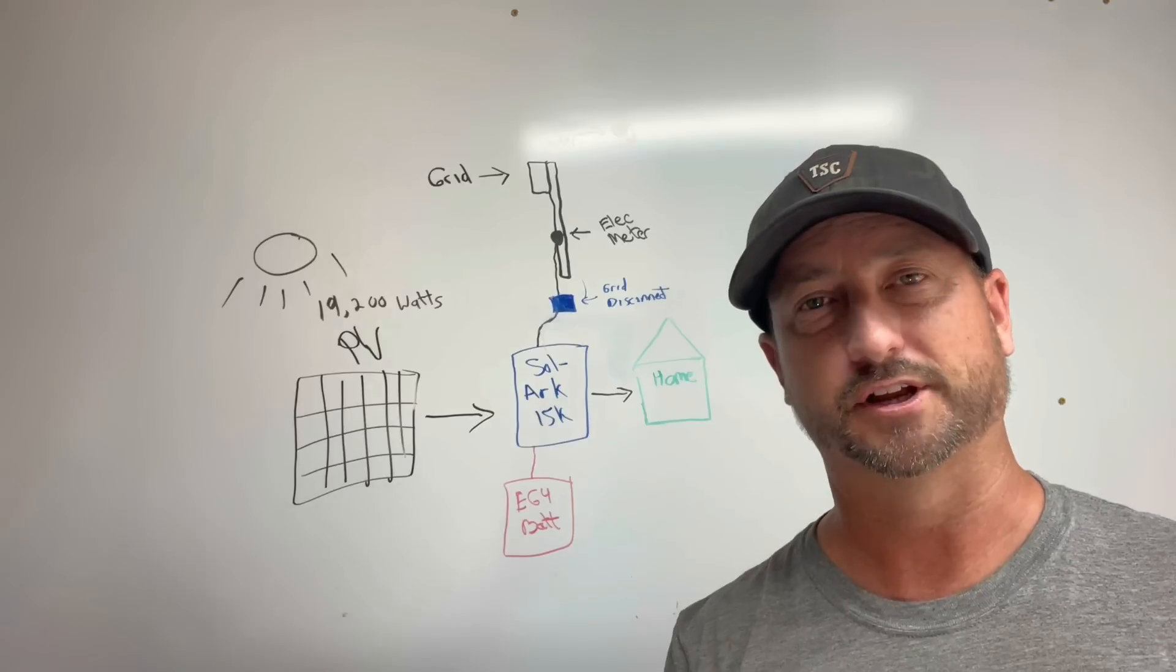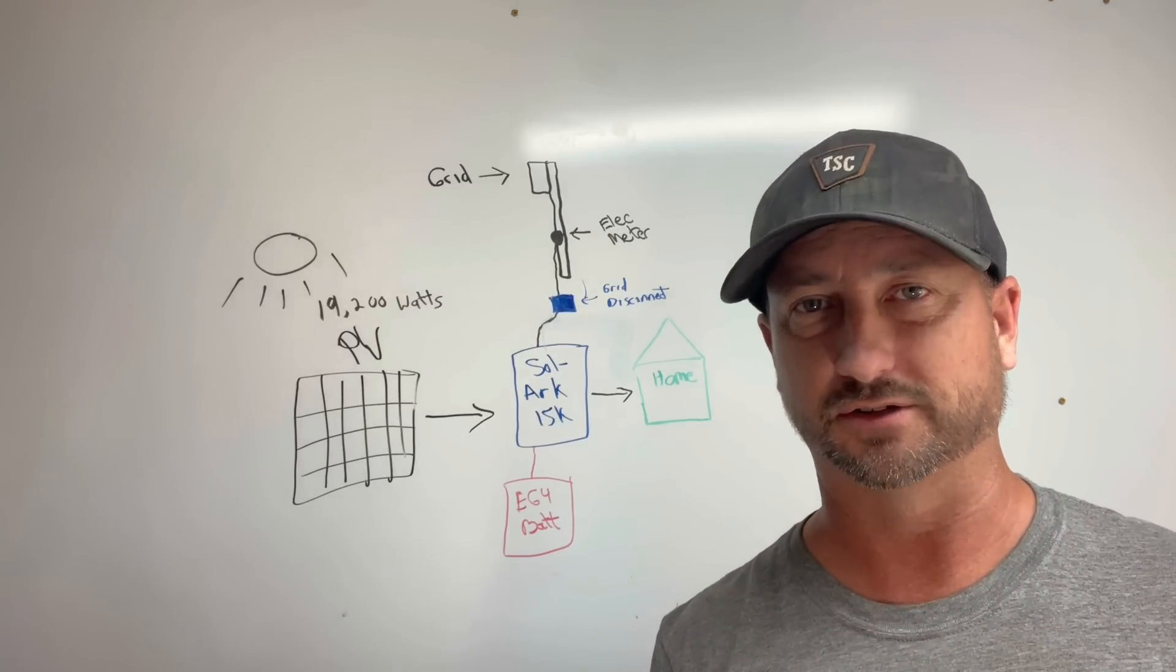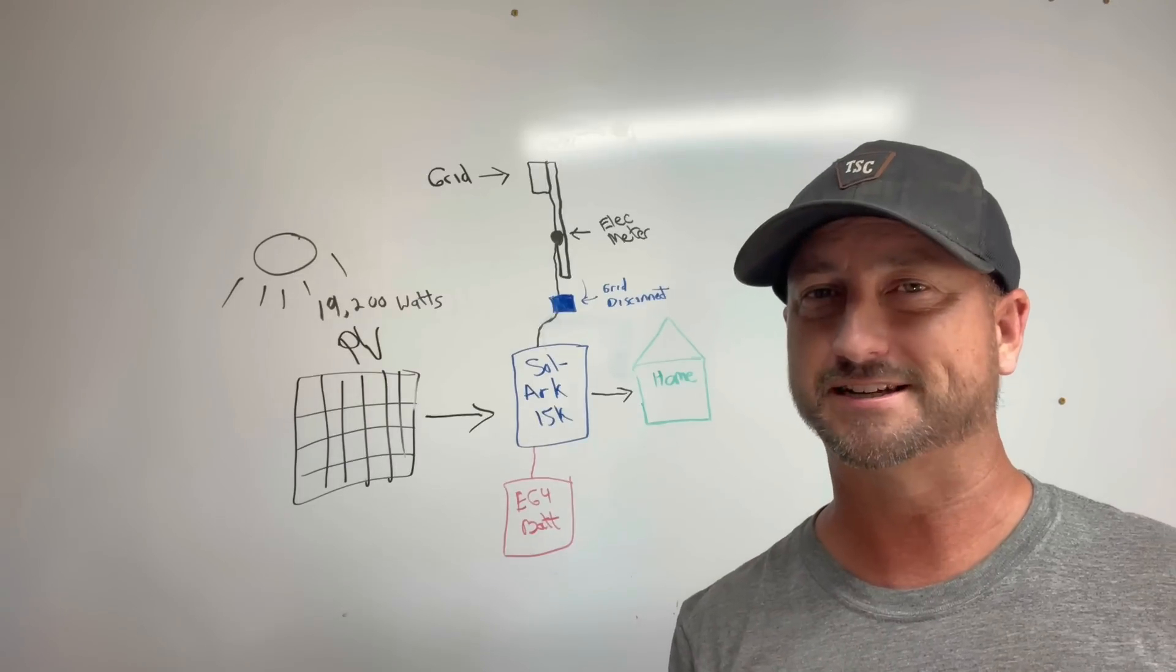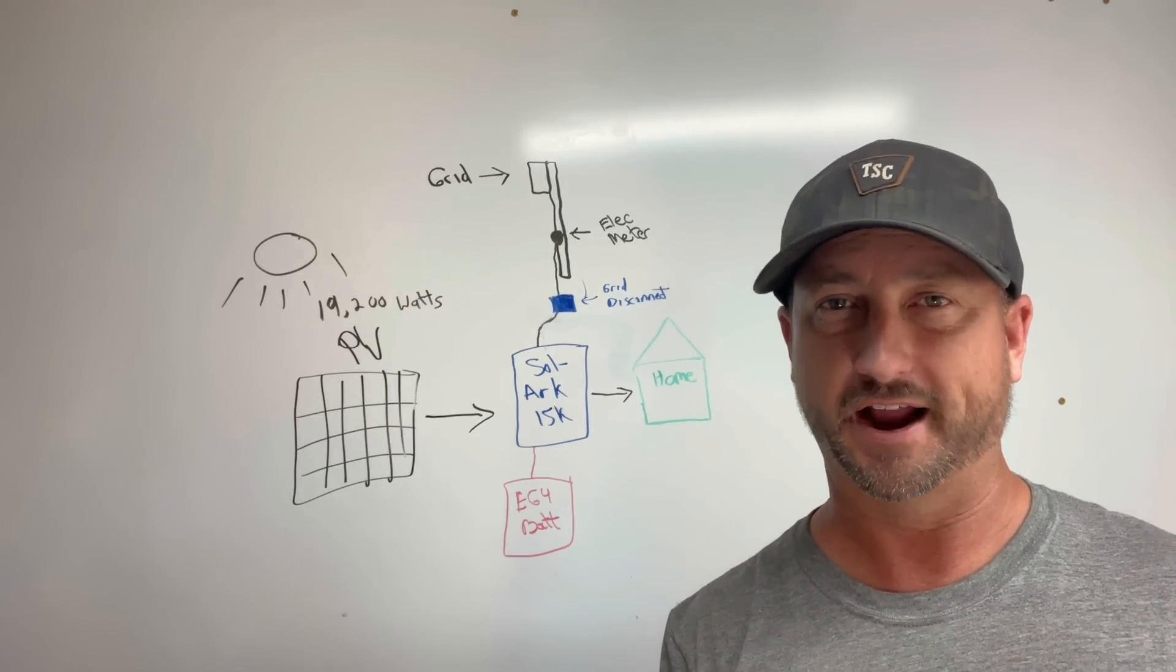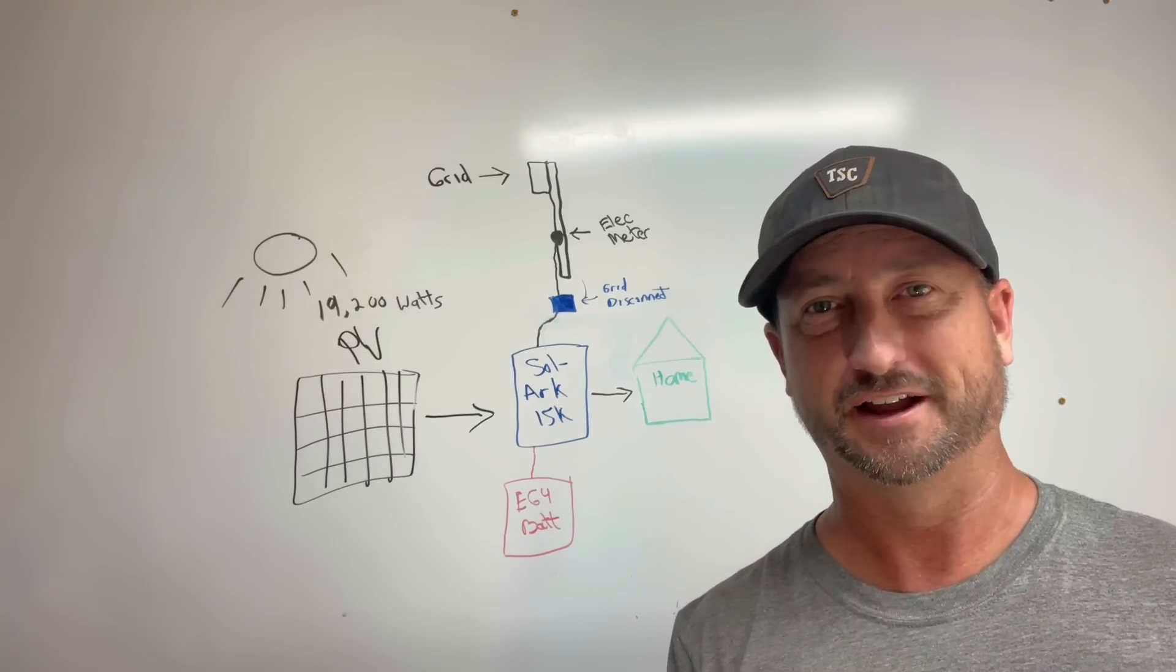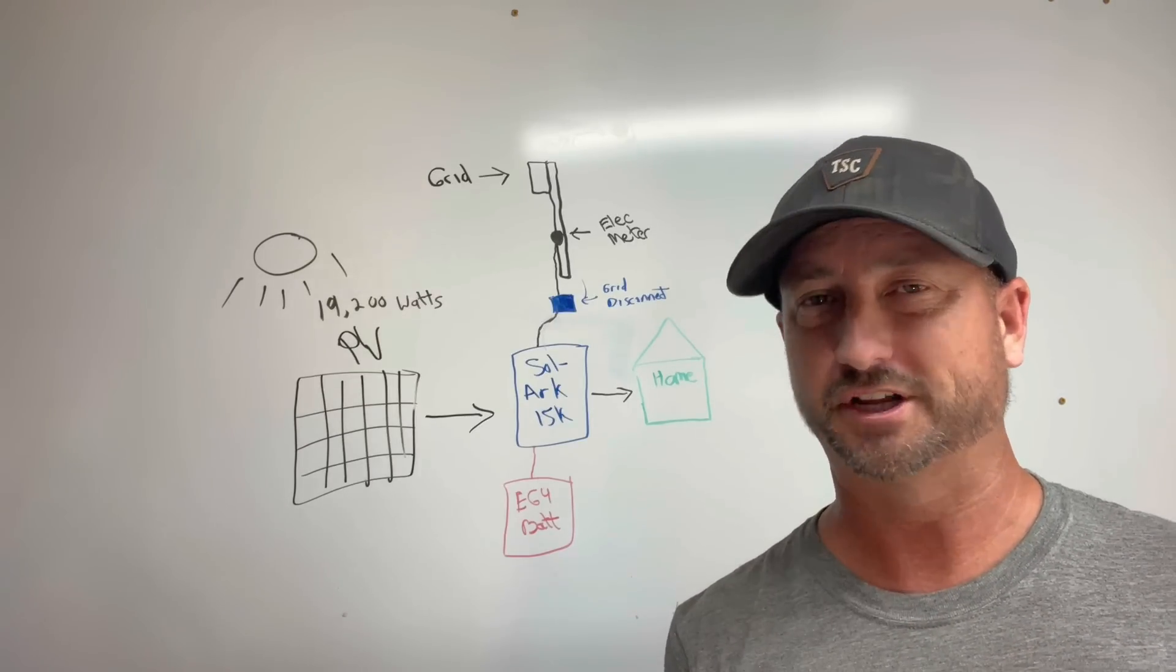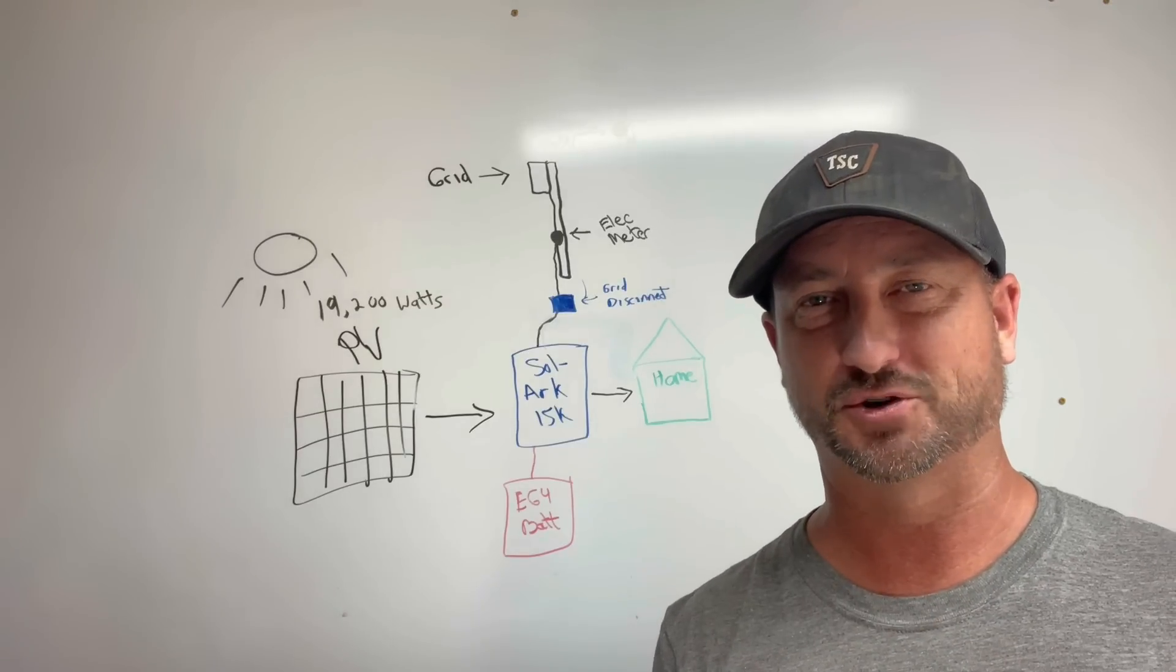With the EG4 18k PV you're going to be using the support from wherever you bought it, whatever vendor you used. Now Signature Solar, Current Connected, they have pretty good customer service so that might not be a big deal. But it is always nice to get an engineer who really only focuses on one inverter like Solark and have them really understand that inverter well and communicate any problems that you have with yours in a way that's easy to fix it.